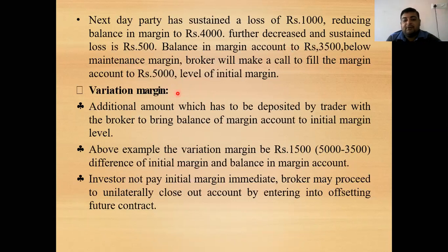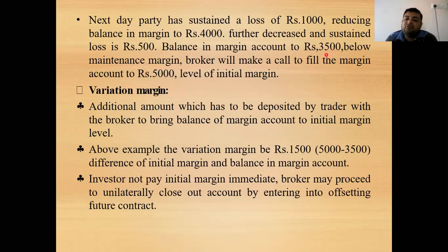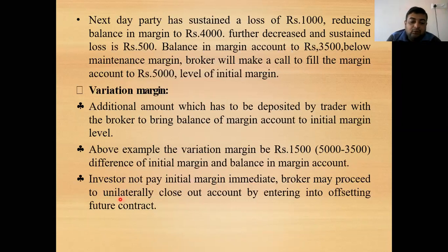The third type of margin is the variation margin. This is the additional amount that must be deposited by the trader with the broker to bring the balance of the margin account back to the initial margin level. For example, if the initial margin is ₹5,000 and after sustaining losses the balance has become ₹3,500, the remaining ₹1,500 is the variation margin. If the trader fails to deposit this variation margin, the broker may proceed to unilaterally close out the account by entering into an offsetting futures contract.